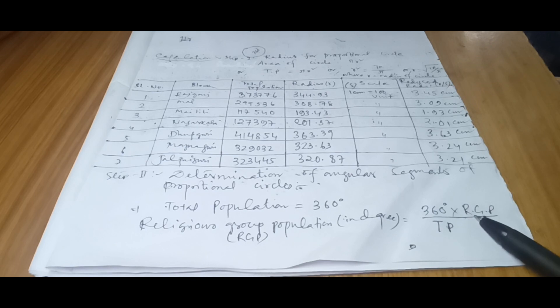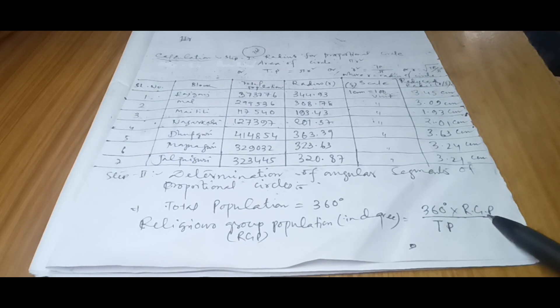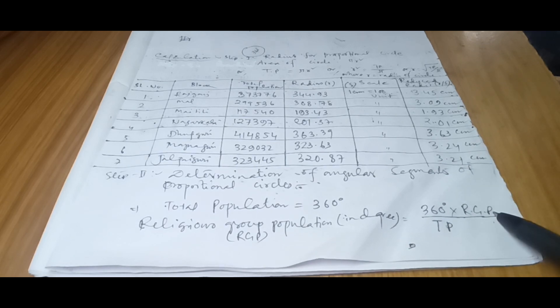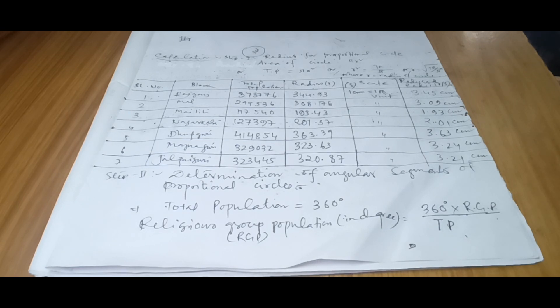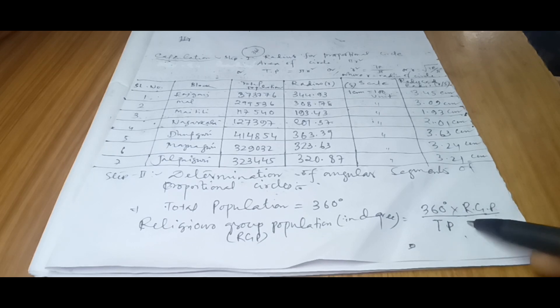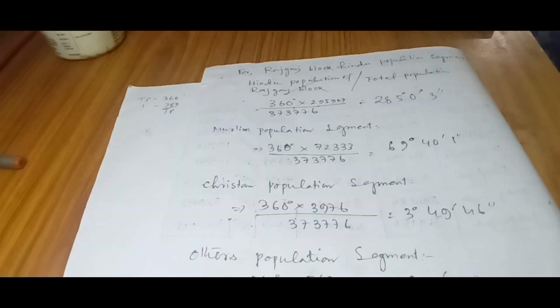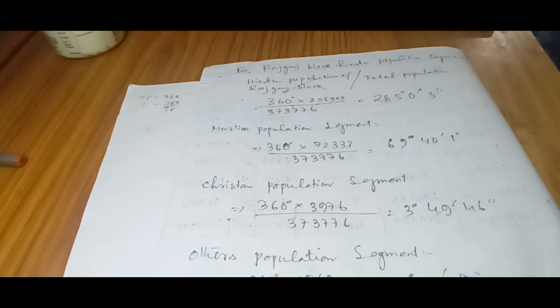So total population is 360 degrees. Then for particular religious group, what is the degree? In that case, we have to go like this: 360 × that religious group population / total population. You can assume any form of data here. If it is like production of different crops, then that will be placed over here divided by the total production of the crops.